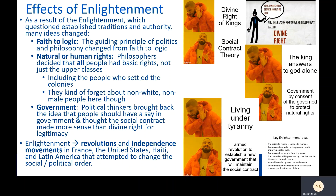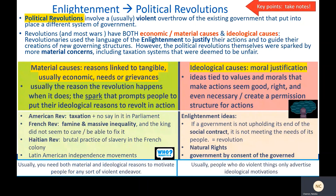Third, government: political thinkers brought back the idea from ancient Greece and Rome that people should have a say in their government, and thought the social contract made a lot more sense than divine right as a source of legitimacy. However, all of these ideas contributed as causes to several concrete, violent political events — revolutions and independence movements in the United States, France, and Haiti.